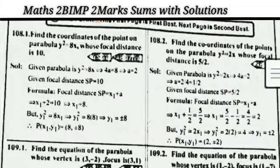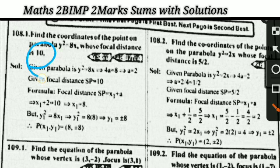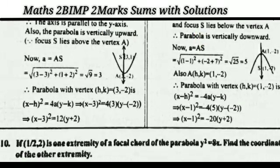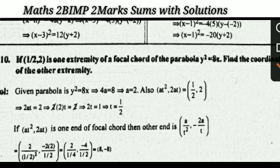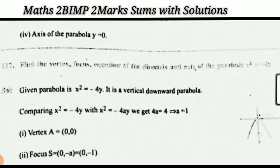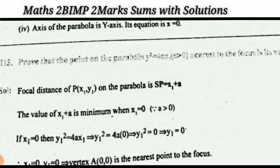Moving to Parabola: find the coordinates of the point on the parabola y² = x whose focal distance equals 10 — a very important two-mark question. Similarly, find coordinates when focal distance = 5/2. Then find the equation of the parabola given vertex and focus. Also: if (1/2, 2) is one extremity of a focal chord of the parabola, find the other extremity. Find vertex, focus, and equation of directrix for y² = 16x and x² = −4y. The point on the parabola nearest to the focus is the vertex.